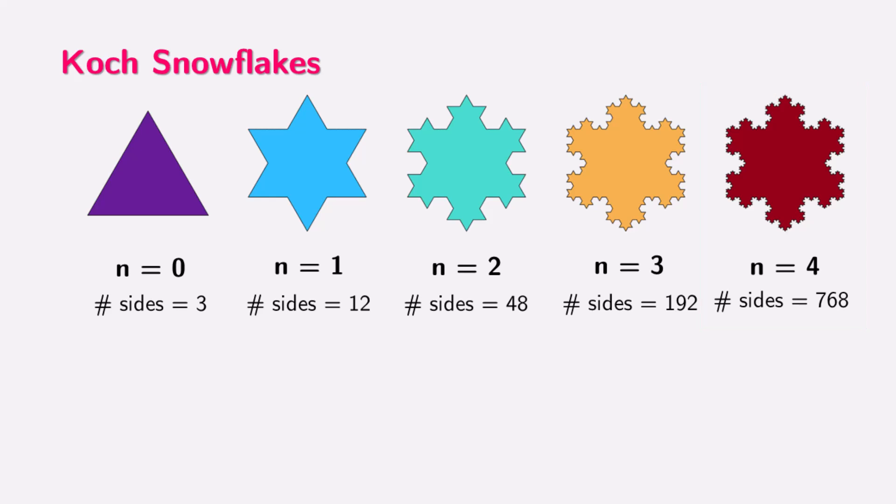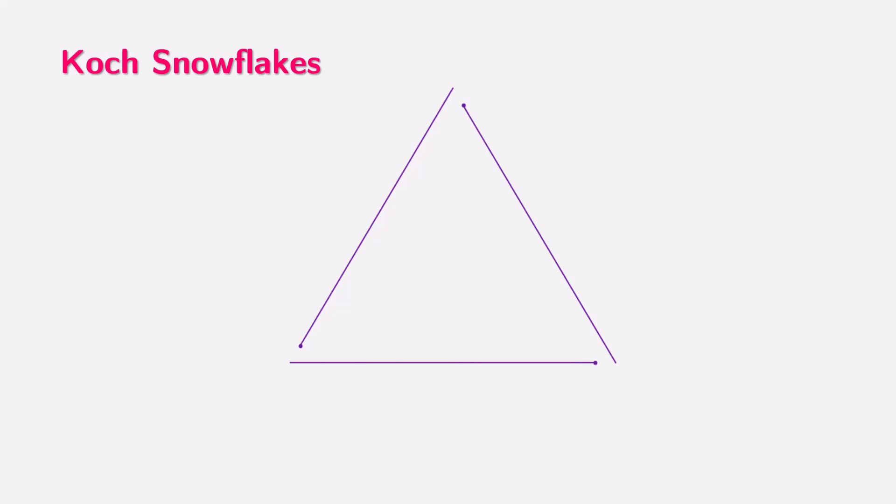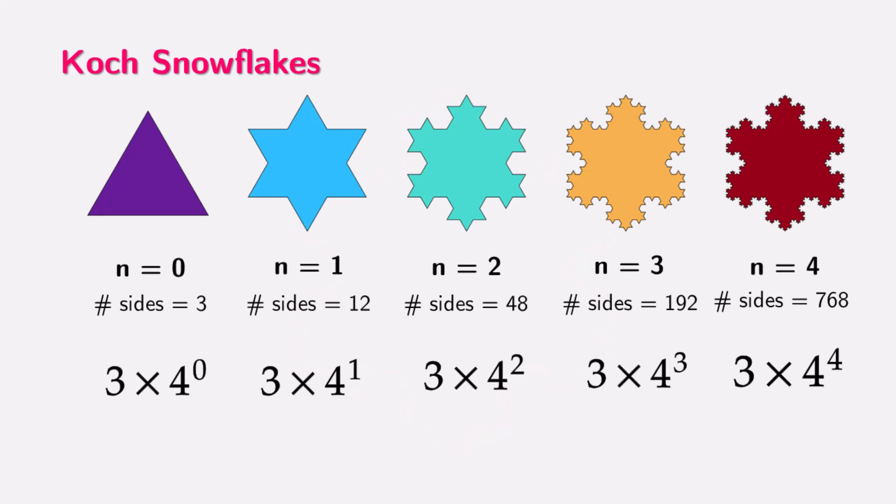If we observe closely, the number of sides follows a specific arithmetic pattern. Mathematically, we can express the number of sides at each step as three times four raised to the power of the iteration number, n. For example, at n equals one, we have three times four to the power of one, which equals 12 sides. At n equals two, we have three times four to the power of two, which equals 48 sides, and so on. The Koch snowflake is a remarkable shape, because as we continue to add smaller and smaller triangles, the perimeter of the shape increases infinitely, but the area remains finite. This illustrates the beautiful and often counterintuitive nature of fractals, where simple rules and patterns can create complex and infinite forms.